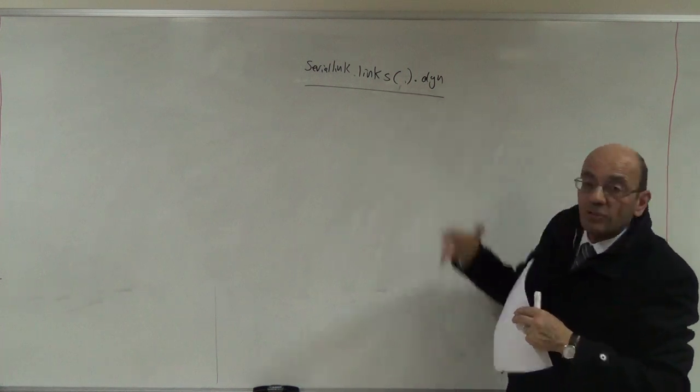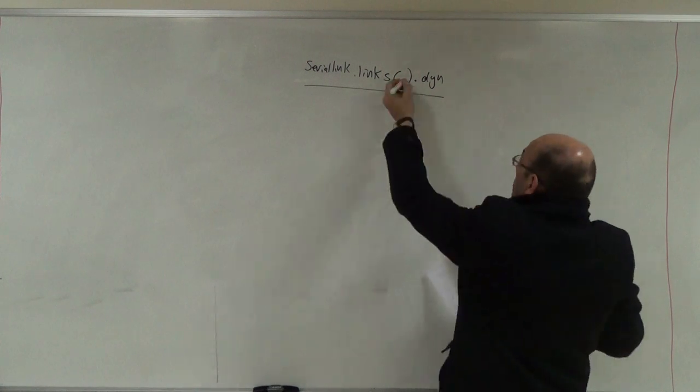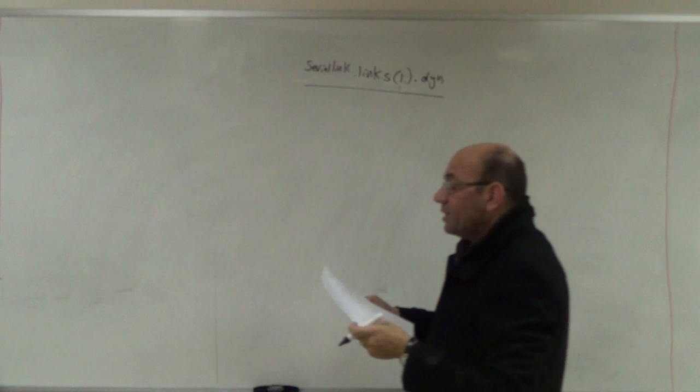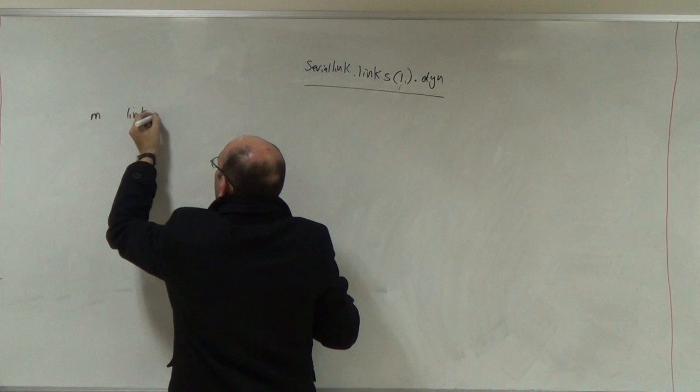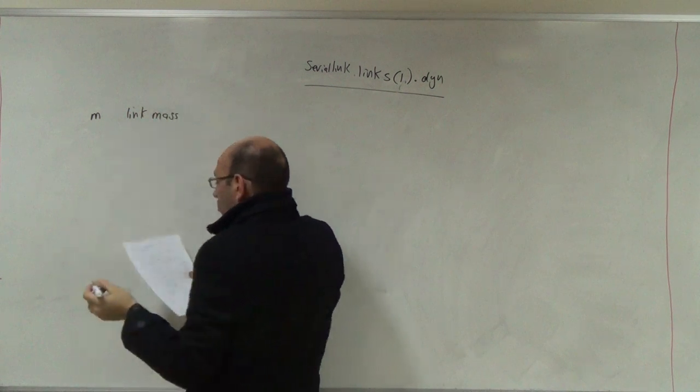It tells me for these links, what are the attributes? If I put the index, say one, two, or three, which is link one, two, or three, it will give me ten answers. The first answer is M, which is the mass.